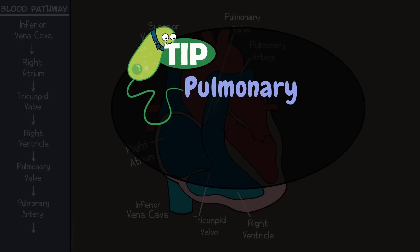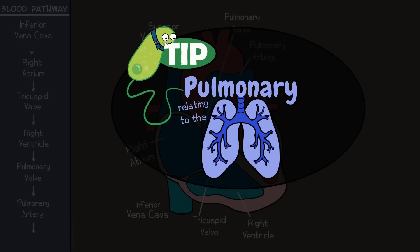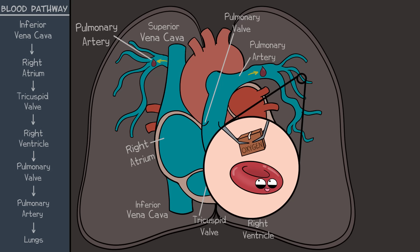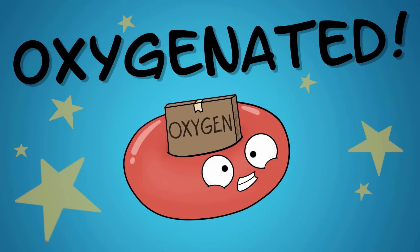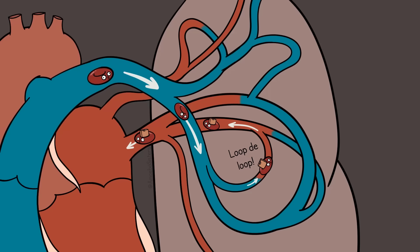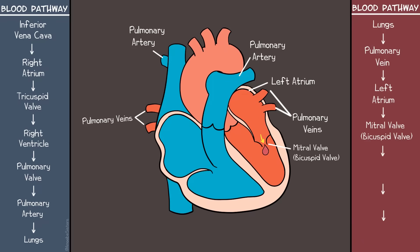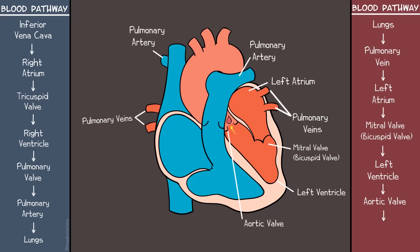By the way, when you see the word 'pulmonary,' it likely involves lungs. The pulmonary artery takes blood to the lungs, where red blood cells take on oxygen and release carbon dioxide. Now the blood is oxygenated. It needs to return to the heart so the heart can pump it throughout the body. The oxygenated blood travels through a pulmonary vein to the left atrium. The left atrium contracts and blood travels through the mitral valve — also known as the bicuspid valve — into the left ventricle. The left ventricle contracts and pumps blood through the aortic valve and out through the aorta, a major artery that carries oxygenated blood throughout the body.